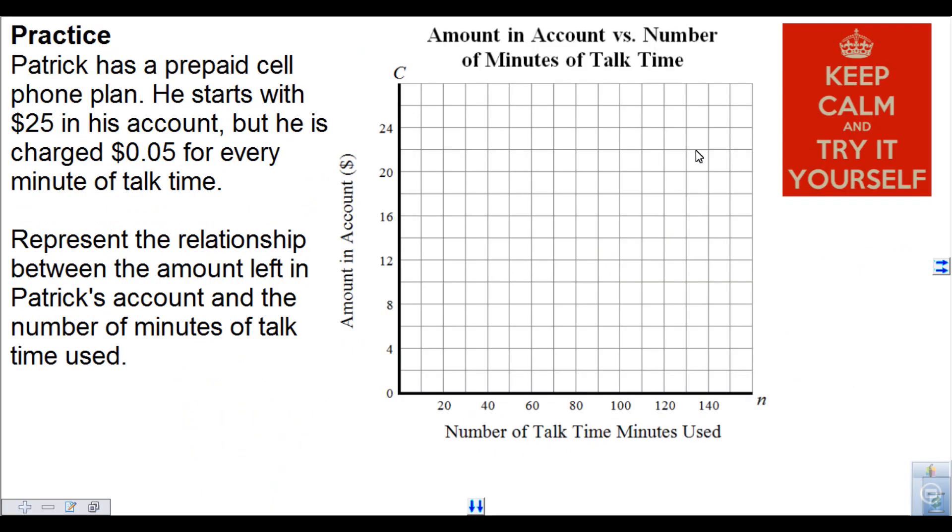All right. Let's try one more. Patrick has a prepaid cell phone plan. He starts with $25 in his account, but is charged 5 cents for every minute of talk time. So you're going to graph the relationship between amount in the account and the number of talk time minutes used. So give it a shot, pause it, and then press play when you're ready to check the answer. Good luck.